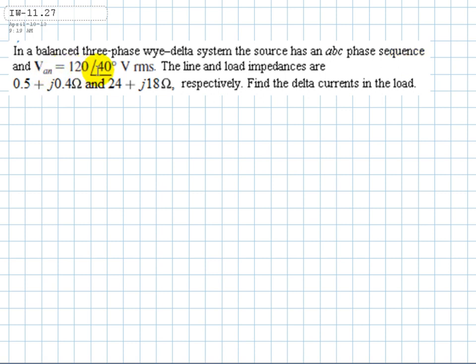The line and load impedances are respectively 0.5 plus j0.4 ohms and 24 plus j18 ohms. Find the delta currents in the load.